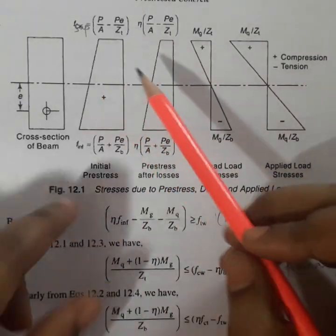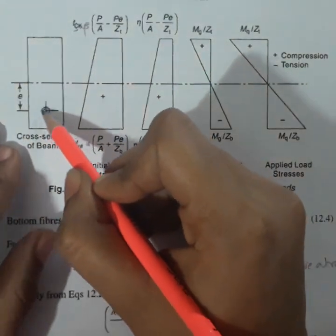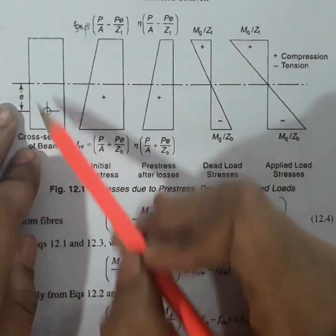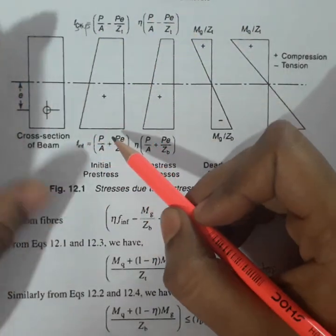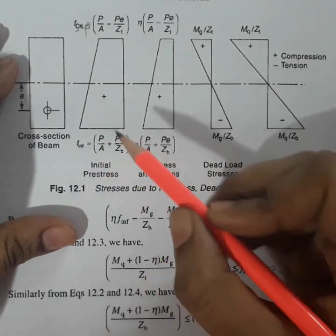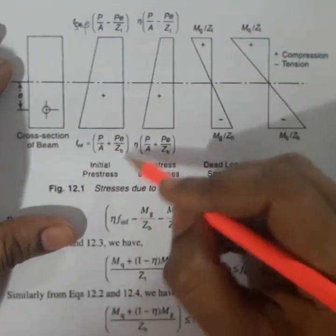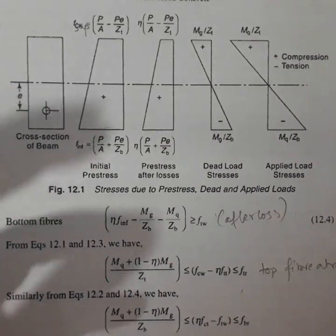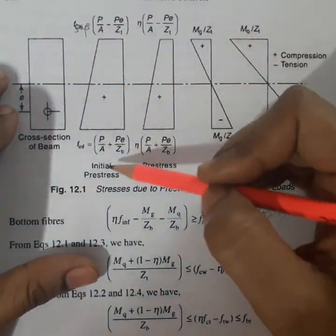As you can see in this diagram, this is the cross-section of a beam where this is the location of the pre-stress tendon, and the eccentricity is denoted as small e. This is the diagram of the initial pre-stress, which is the combination of the axial stress and the pre-stressing stress due to that eccentricity. These are the stresses a beam should resist before applying any live load or considering the self-weight or dead load.